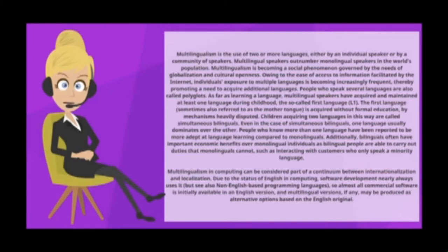People who speak several languages are also called polyglots. Multilingual speakers have acquired and maintained at least one language during childhood — the so-called first language, or L1, sometimes also referred to as the mother tongue — acquired without formal education by mechanisms heavily disputed. Children acquiring two languages in this way are called simultaneous bilinguals. Even in the case of simultaneous bilinguals, one language usually dominates over the other.